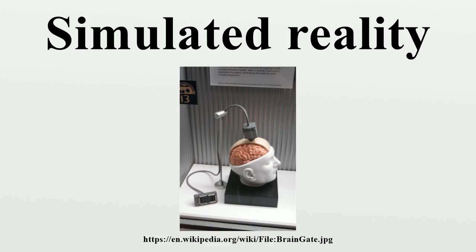Types of Simulation: Brain-Computer Interface. In brain-computer interface simulations, each participant enters from outside, directly connecting their brain to the simulation computer. The computer transmits sensory data to the participant, reads and responds to their desires and actions in return. In this manner they interact with the simulated world and receive feedback from it. The participant may be induced by any number of possible means to forget, temporarily or otherwise, that they are inside a virtual realm. While inside the simulation, the participant's consciousness is represented by an avatar,